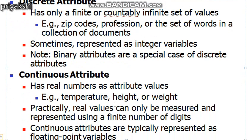A continuous attribute can take values that are real numbers. Examples include attributes such as temperature, height, and weight. Continuous attributes are typically represented as floating point variables.